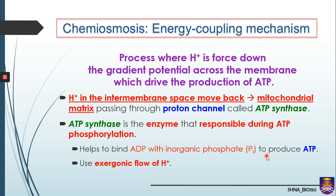Now let's continue with chemiosmosis — the second part of OP. It also has an energy coupling mechanism. Chemiosmosis is defined as the process where protons are forced down the concentration gradient across the membrane, which drives the production of ATP. In the previous ETC, only the transfer of electrons to oxygen occurred. But in chemiosmosis, the effects from the ETC contribute to the production of ATP.